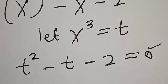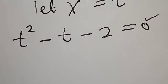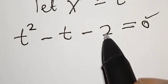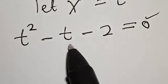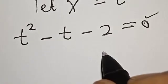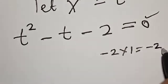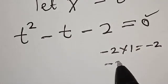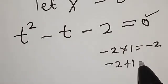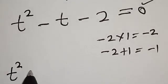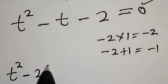This can be solved by using factorization method or the quadratic general formula. In this case I'm going to make use of factorization method — finding two numbers so that their product gives minus 2 and their sum gives minus 1. If you have minus 2 multiplied by 1, it's going to be minus 2, and minus 2 plus 1 gives minus 1.